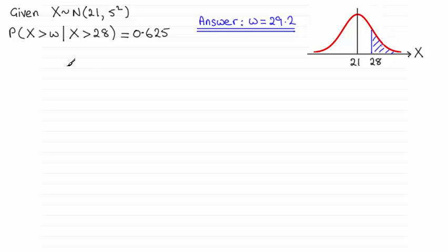Now we're told that the probability of x being greater than this value w given that x is greater than 28 is 0.625. So as you can see I've shaded on that probability of being more than 28. So we know that being more than 28 has occurred, we're looking for the probability that x is greater than this value w. So if I mark on w it's got to be in this shaded region. So let's just say it's this point here, put that in as w.